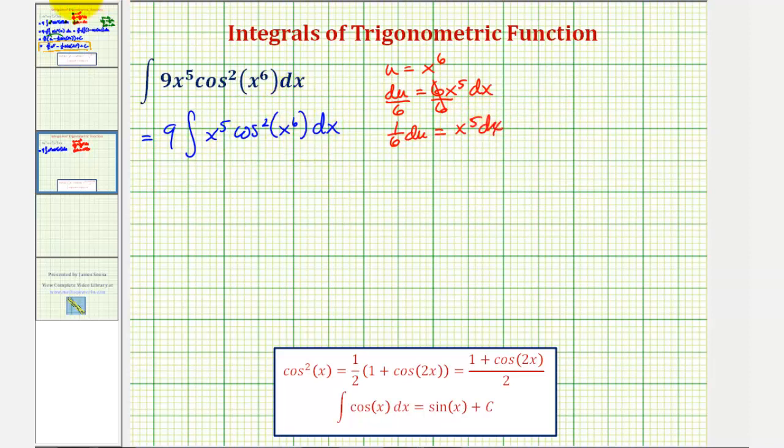Now let's write this in terms of u. We have nine times the integral of x to the fifth dx, which equals one-sixth du. So we'll factor out the one-sixth and we have differential u, and x to the sixth equals u, so we have the integral of cosine squared u.